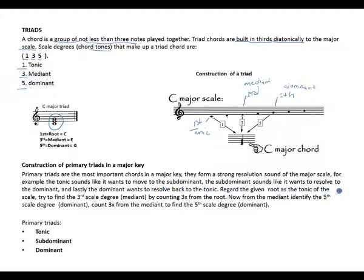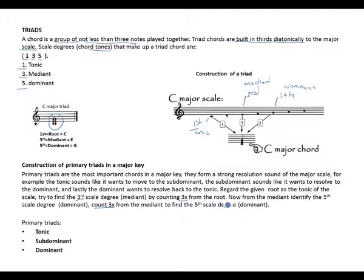The subdominant sounds like it wants to resolve to the dominant, and lastly the dominant wants to move back to the tonic. To construct: regard the given root as the tonic of the scale. Find the third by counting three times — your third is your mediant. From the mediant, count three times again to identify the fifth scale degree, which is the dominant. Primary triads are built on tonic, subdominant, and dominant.